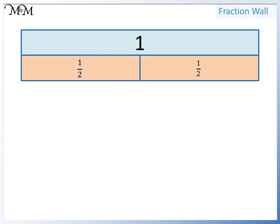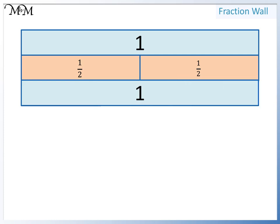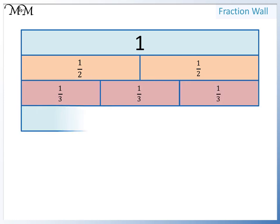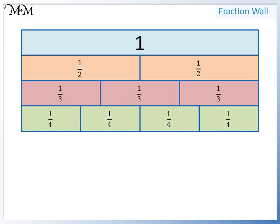We take another whole and divide it into three. We have one, two, three thirds. We can divide a whole into four equal parts. We have one, two, three, four — four quarters.